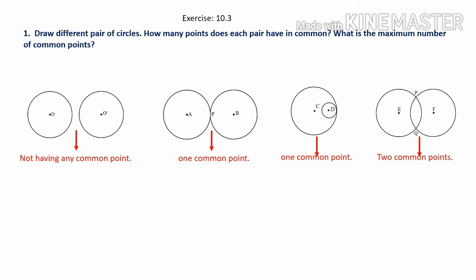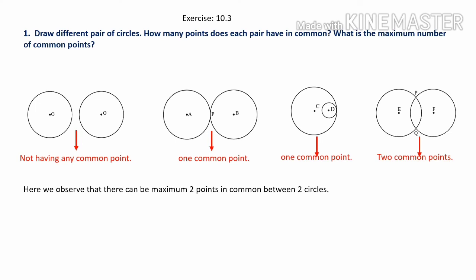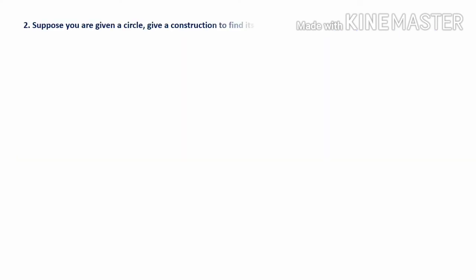So these are the four possible ways. In the first case the two circles are not meeting at any point, so no common point. In the second case they meet at one point, so one common point. In the third case also one common point. In the last case they intersect at two points P and Q, so two common points. Therefore the maximum number of common points between two circles is two.